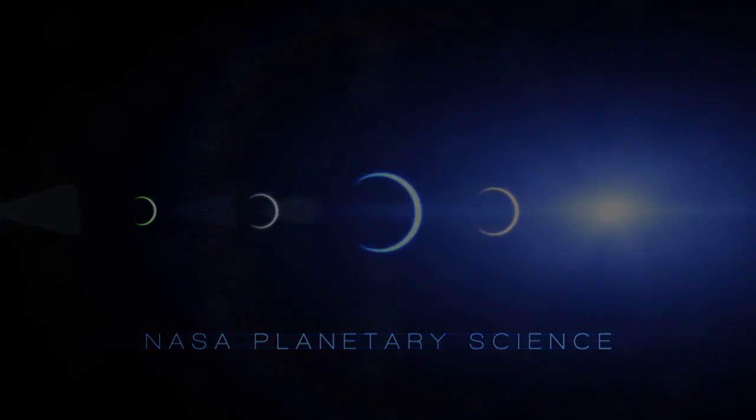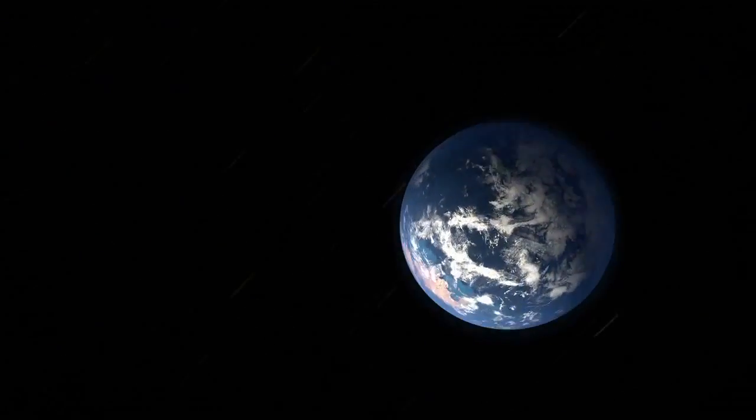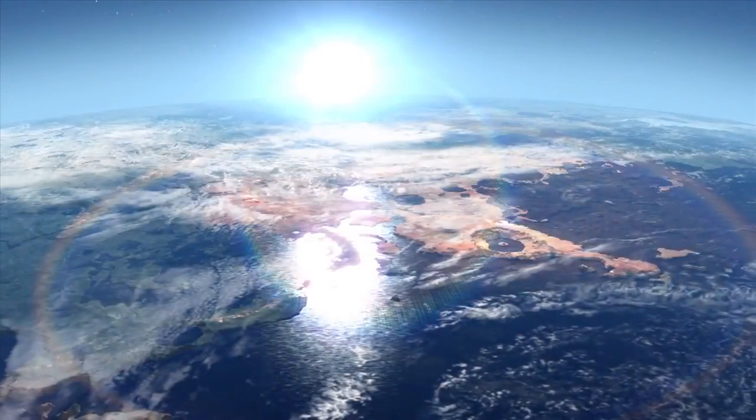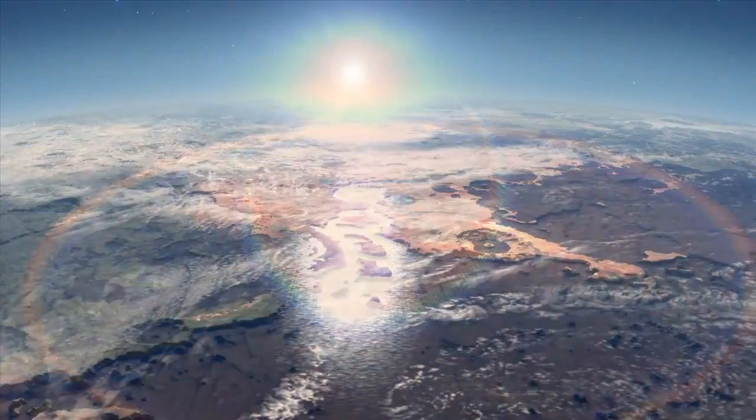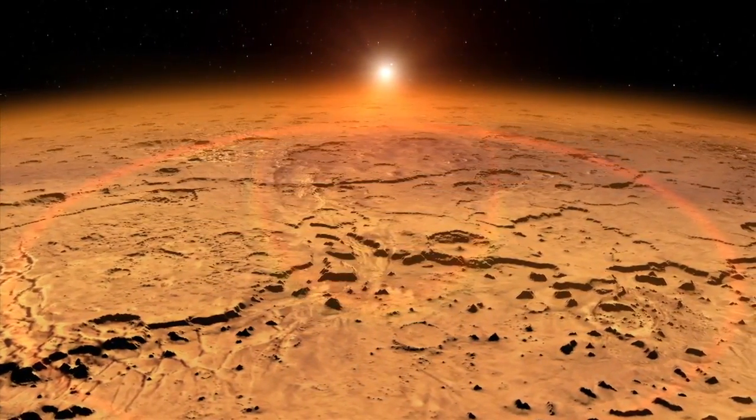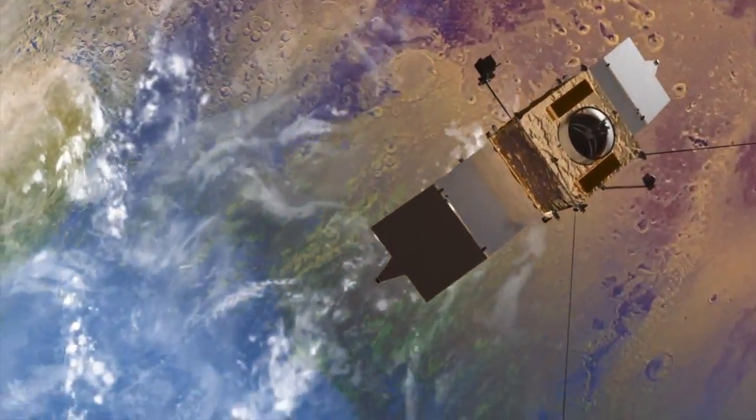So a real outstanding question is, what was the early atmosphere of Mars like, and for how long did it last? Did the conditions on Mars early on that might have been favorable for life persist for hundreds of millions of years, for tens of millions of years, or how long exactly did they persist? The MAVEN mission is designed to really get at the climate history of Mars.